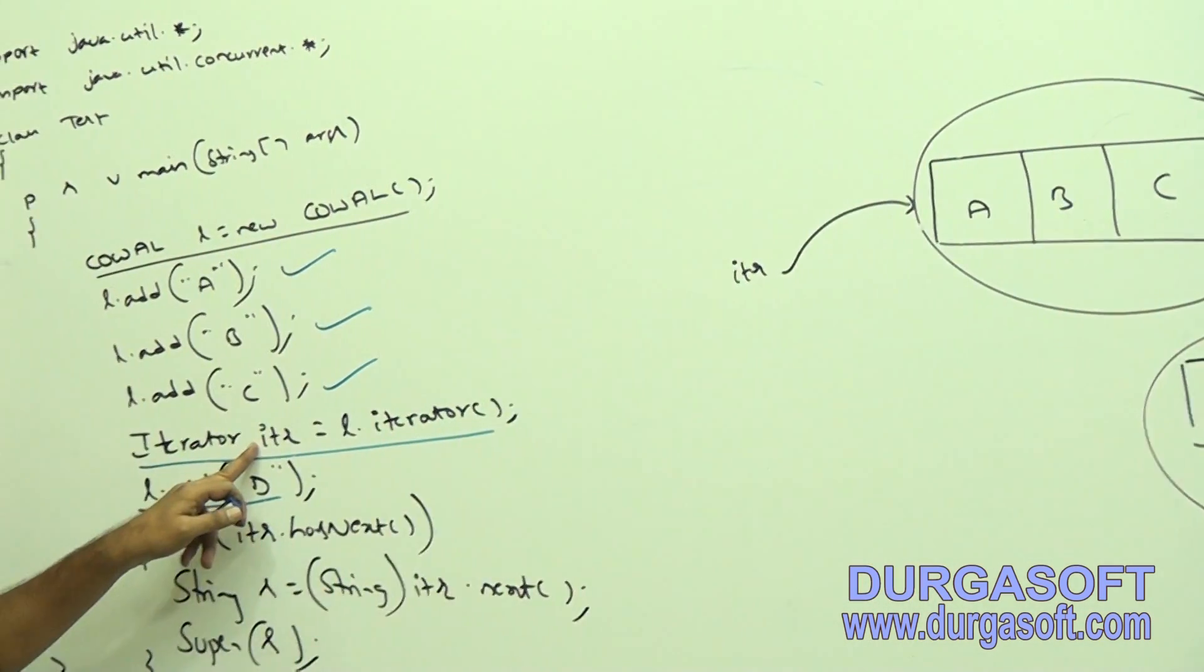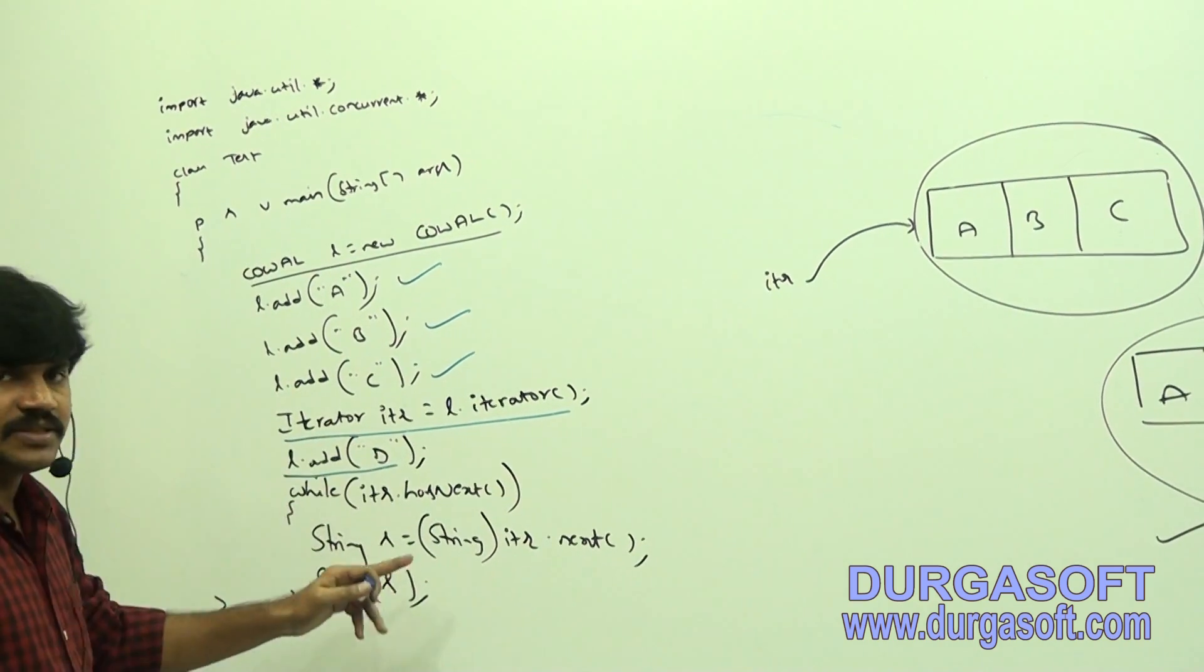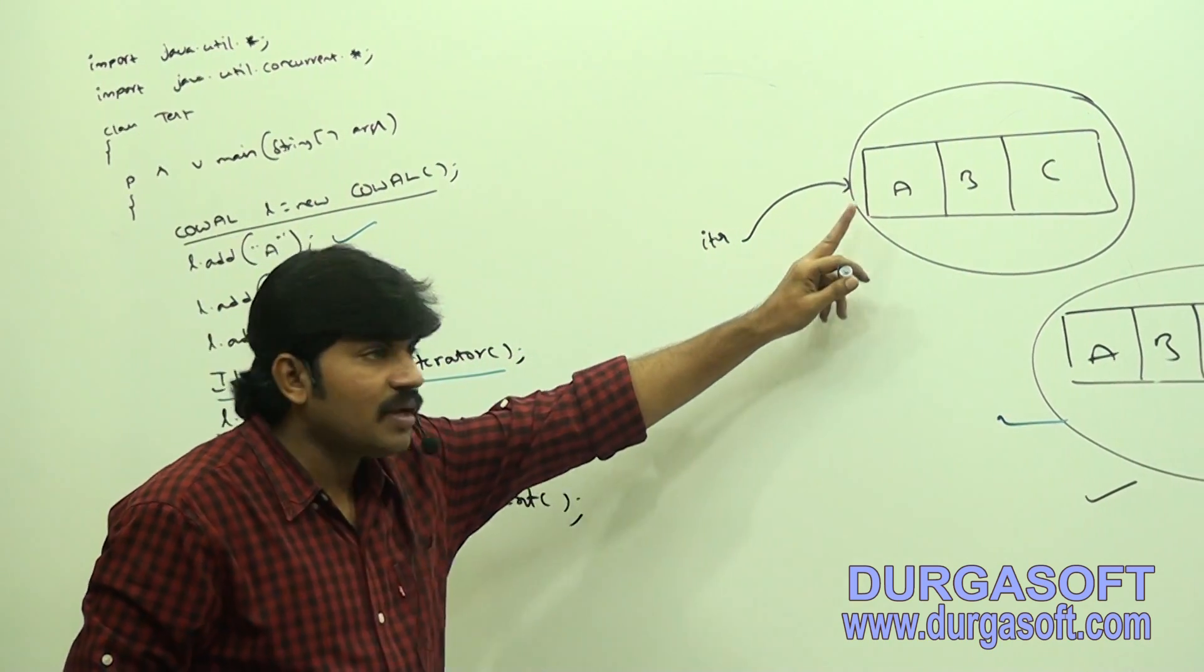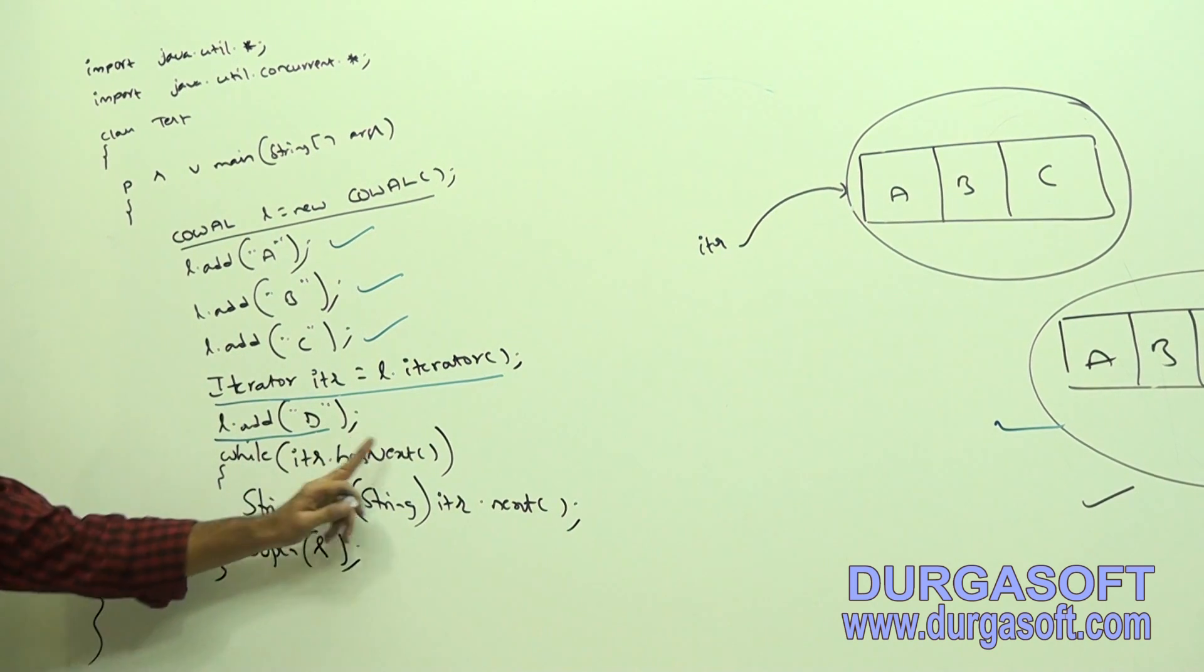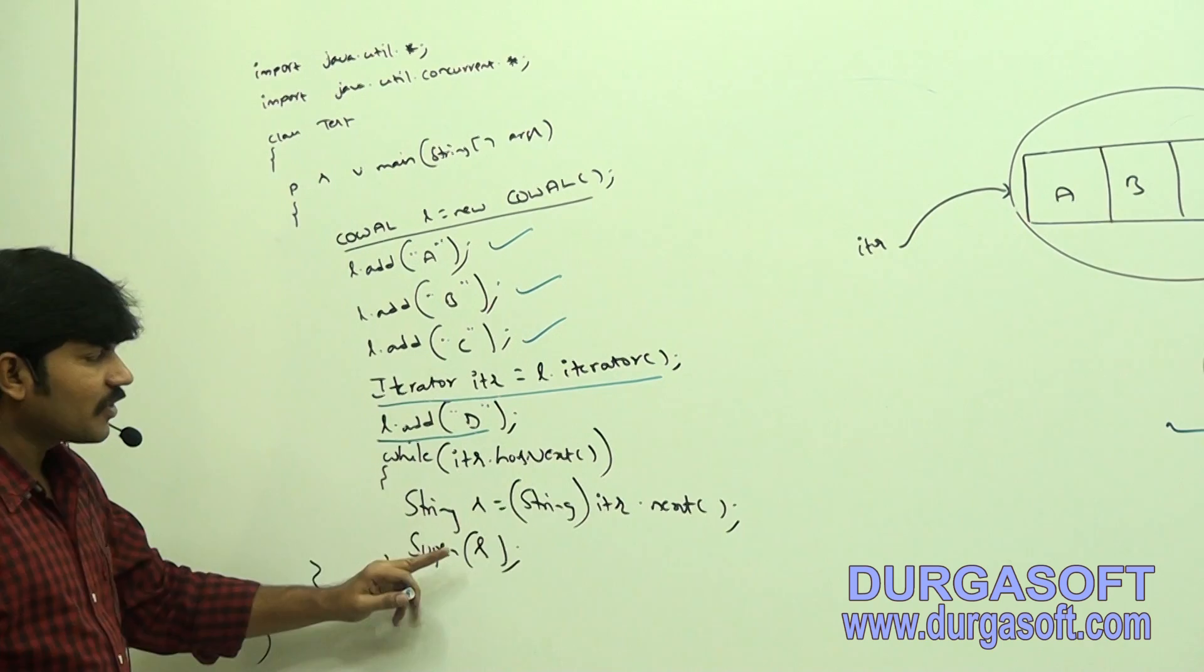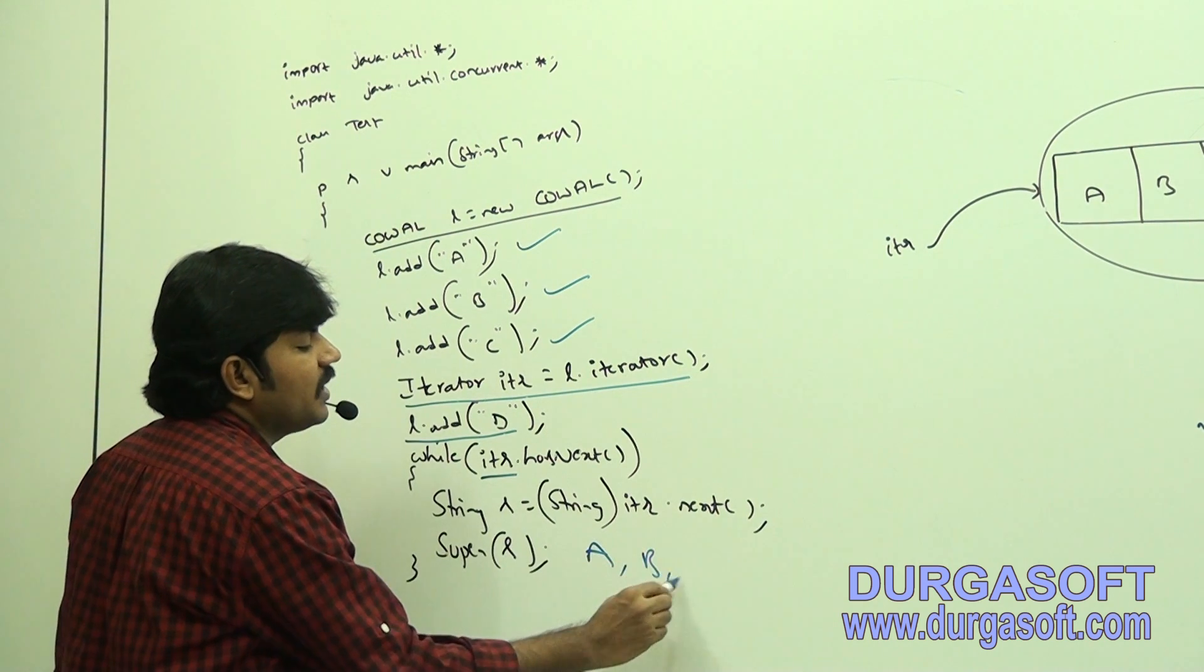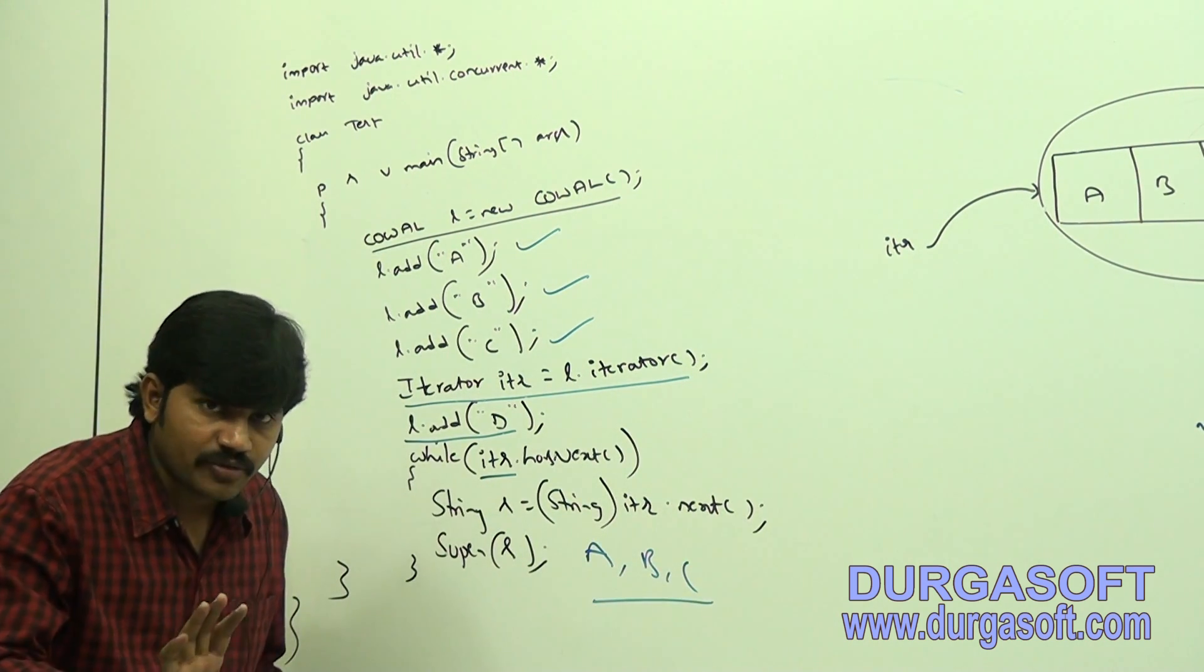So with this updation, a new cloned copy by default will be created. But iterator is pointing to the old copy only, right? Now, observe that, while I iterate, has next? Can you please print elements of CopyOnWriteArrayList by using that iterator? The output by default, we are going to get A, B, C only, but not A, B, C, D. Clear, right, okay?